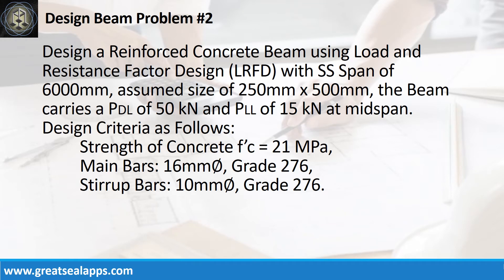Design a reinforced concrete beam using load and resistance factor design with a simply supported span of 6000 mm. Assume size of 250 mm by 500 mm. The beam carries a concentrated dead load of 50 kN and concentrated live load of 15 kN at mid-span. Design criteria: strength of concrete 21 MPa, main bars 16 mm bar grade 276, stirrup bars 10 mm bar grade 276.